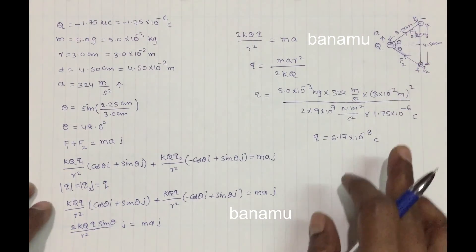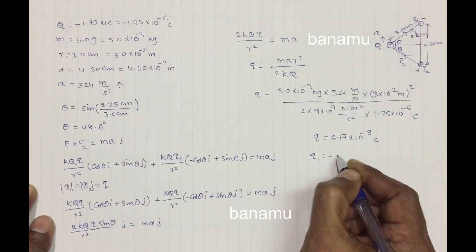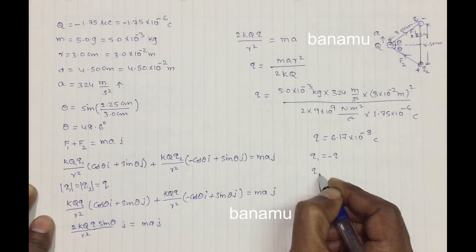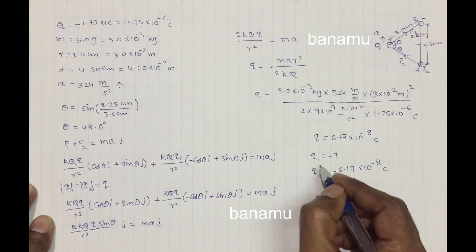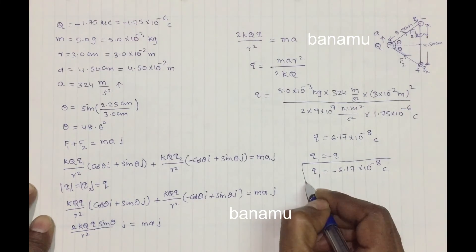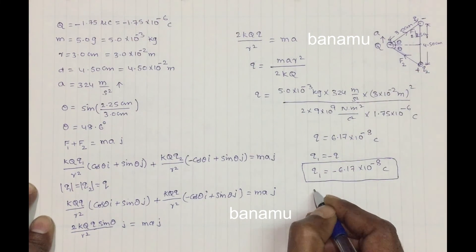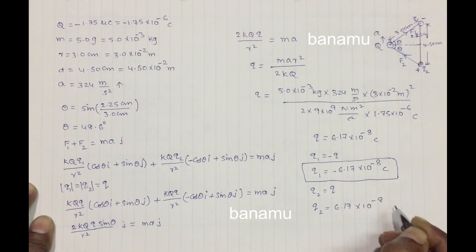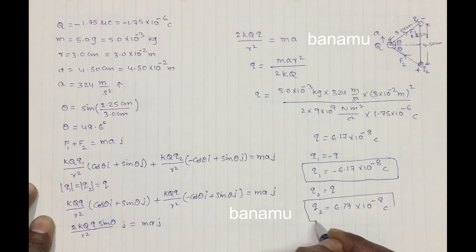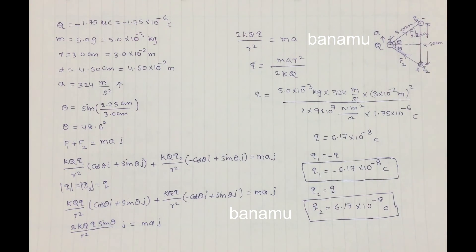From the figure, Q1 is taken as negative, so Q1 = −6.17 × 10⁻⁸ coulombs. Q2 is taken as positive, so Q2 = +6.17 × 10⁻⁸ coulombs. These are the values of both charges: Q1 is negative and Q2 is positive.